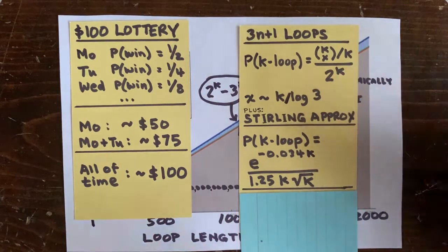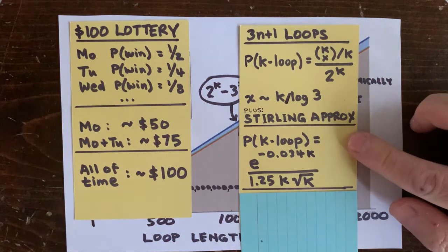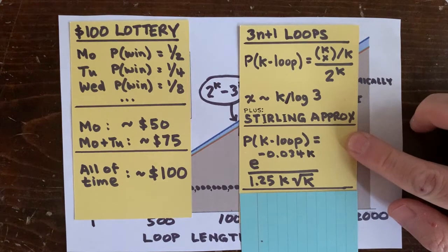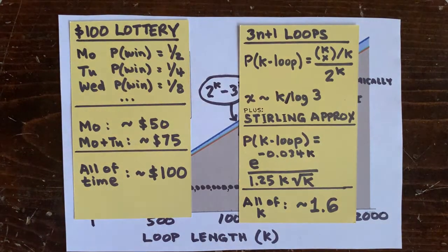And after some 8th grade math, we get the expected number of integer loops at length k to be this: e to the negative 0.034k over 1.25k square root k. Now that decreases exponentially with increasing k. If we sum that expression from k equals 2 to infinity, we get a convergence to about 1.6. So we expect 1.6 integer loops total.